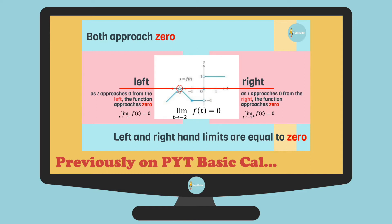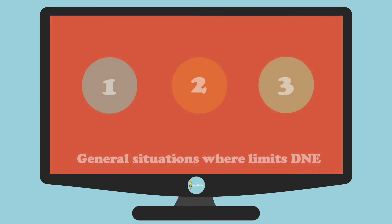In this video, we'll flesh out that basic principle. There are three general situations where the limit does not exist at the point.